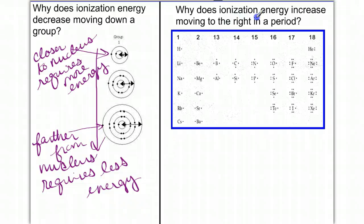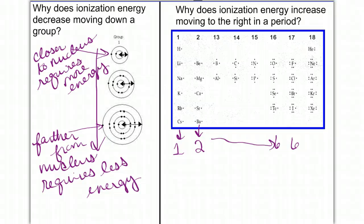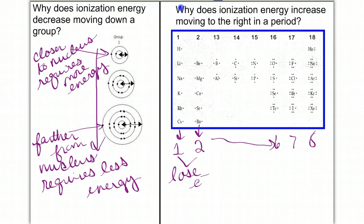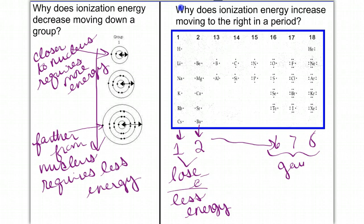Why does ionization energy increase moving to the right in a period? As we move left to right, it's a matter of valence electrons. Group one has one valence, group two has two, and skipping across, group six has six, group seven has seven, and group eight has eight. Elements with one to three valence electrons actually want to lose their electrons, so it requires less energy to remove them since they're trying to give them away. Whereas elements in groups six and seven are trying to gain electrons, so taking what they already have requires a lot of energy.